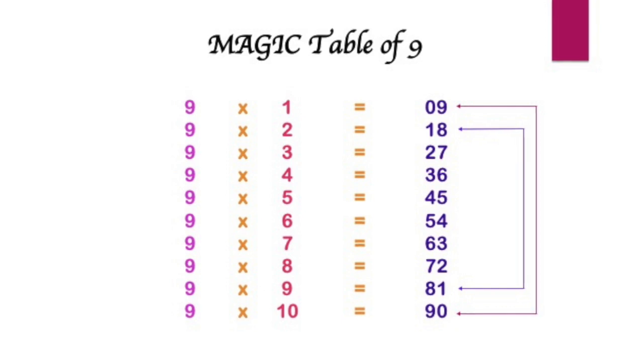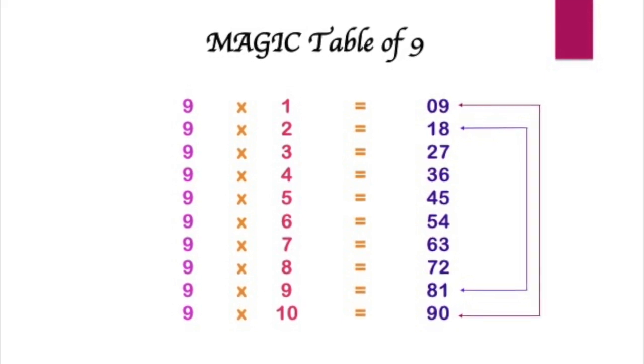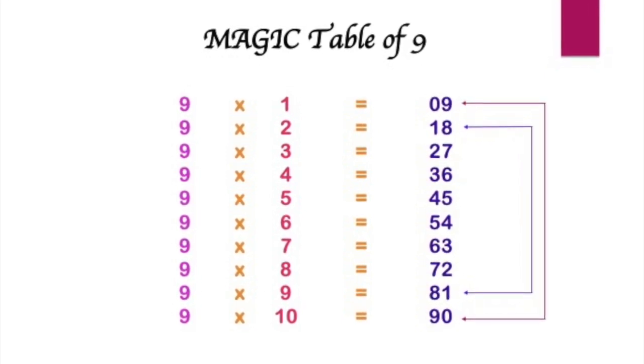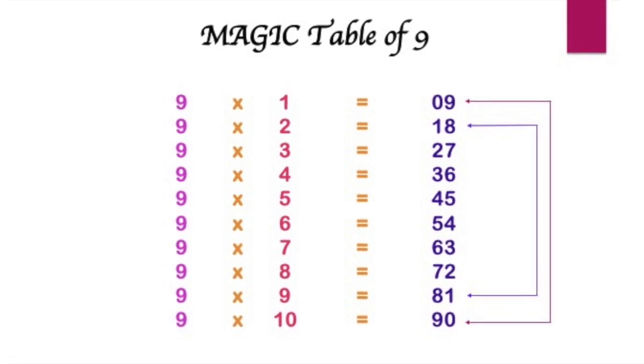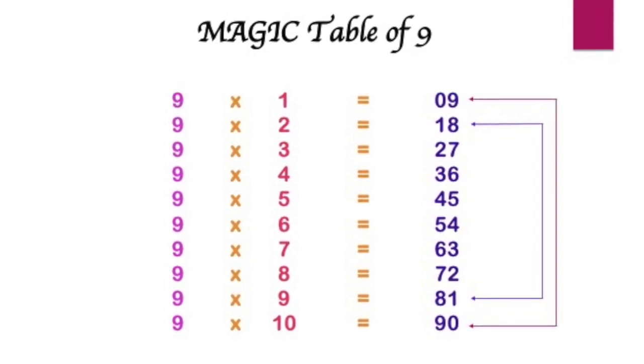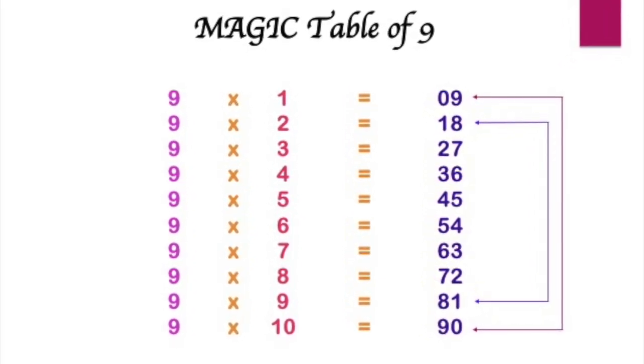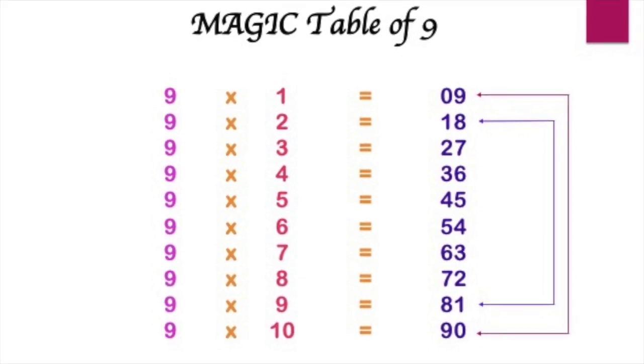Now observe the second multiple from the top and second multiple from bottom. That is 9 multiplied by 2, which is 18, 1 and 8, and 9 multiplied by 9, which is 81, 8 and 1.